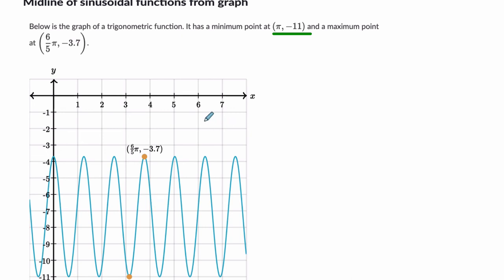So it doesn't matter if your sinusoidal function is entirely negative in height or positive. What you're going to do to find your midline if you're given a maximum and minimum point is add the heights of the two points and average them.